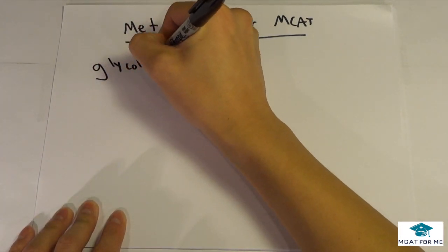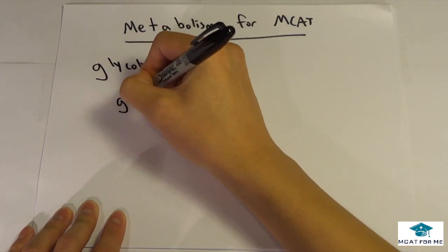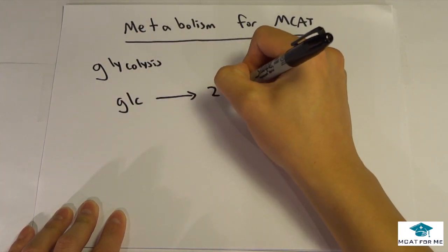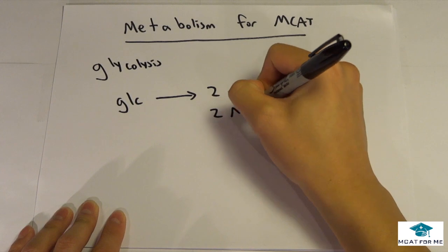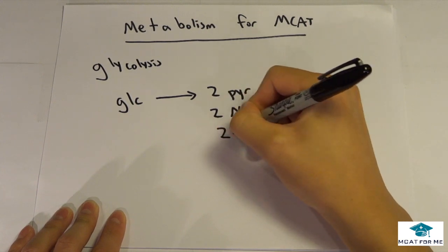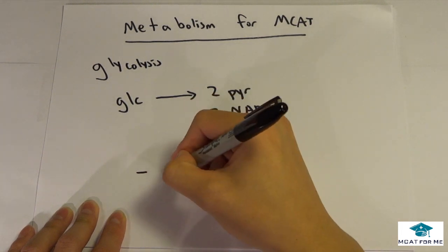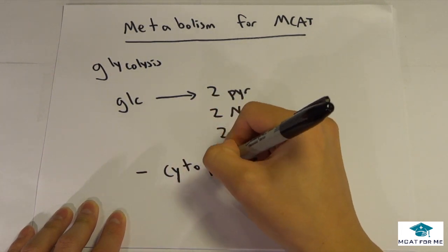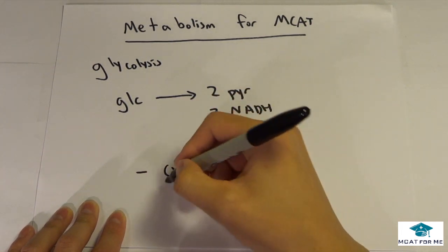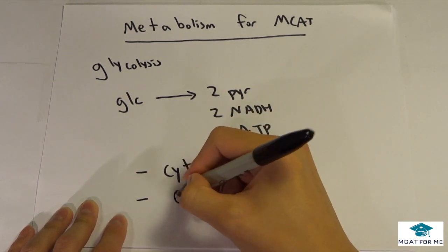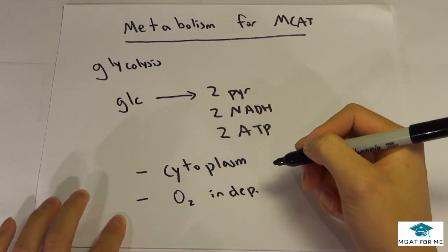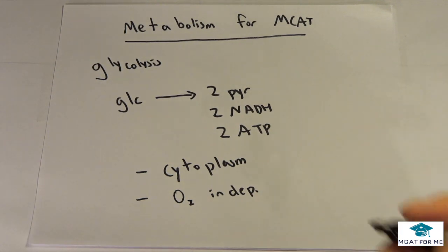So glycolysis, what do we need to know about that? It's glucose, goes into 2 pyruvate, 2 NADH, and 2 ATP. That's all you need to know and you need to know that it's in the cytoplasm. This all occurs in the cytoplasm of the cell and it's oxygen independent. So regardless of whether or not there's oxygen, glycolysis will occur.